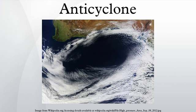An anticyclone is a weather phenomenon defined by the United States National Weather Service's glossary as a large-scale circulation of winds around a central region of high atmospheric pressure, clockwise in the northern hemisphere, counterclockwise in the southern hemisphere.